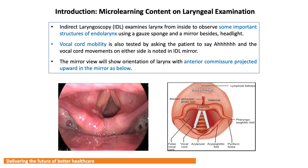Indirect laryngoscopy, or IDL, examines the larynx from inside to observe important structures of the interior larynx using a gauze sponge and a mirror, besides a headlight. Almost 6 to 8 structures can be examined through IDL, but another 3 — making it 11 structures total — require other procedures to observe, and students must memorize all of them.